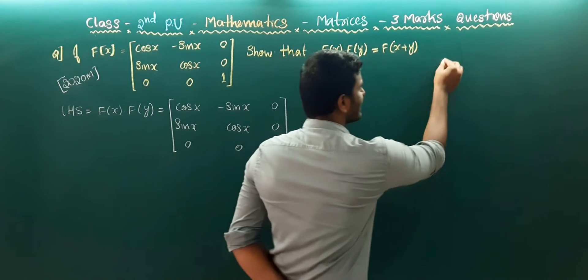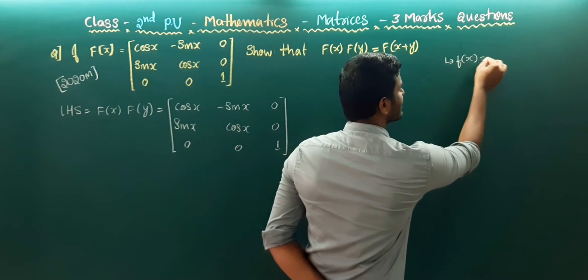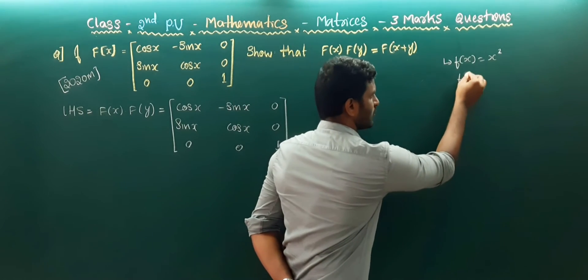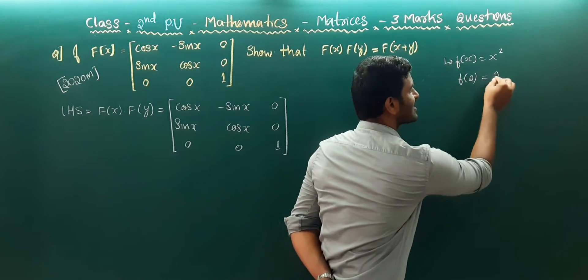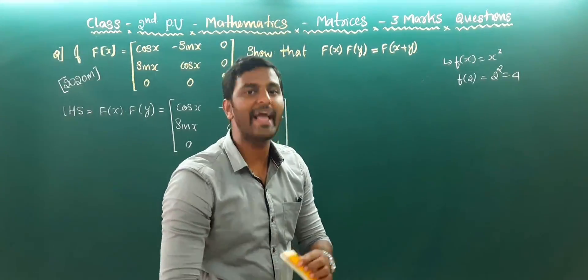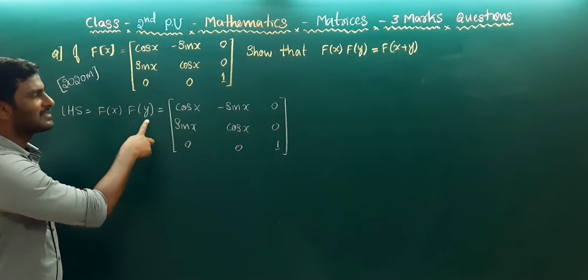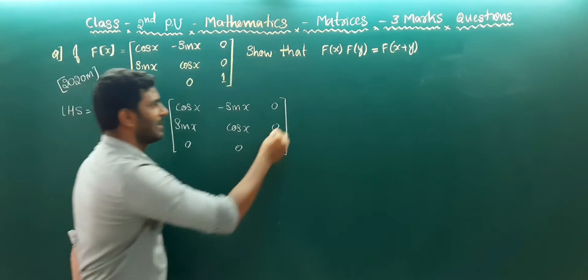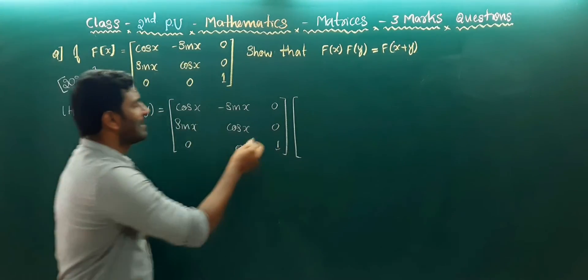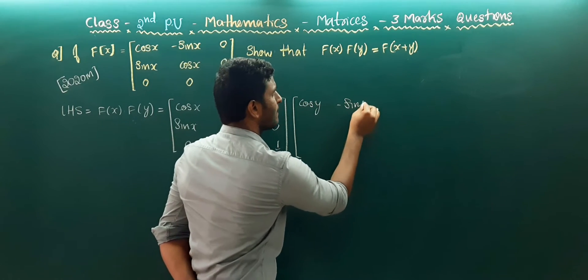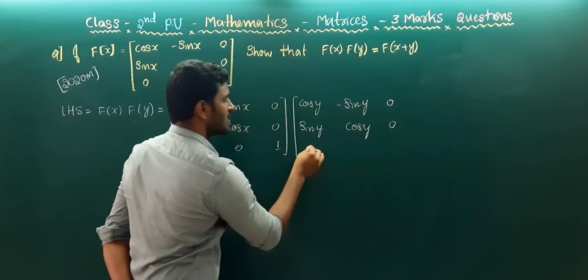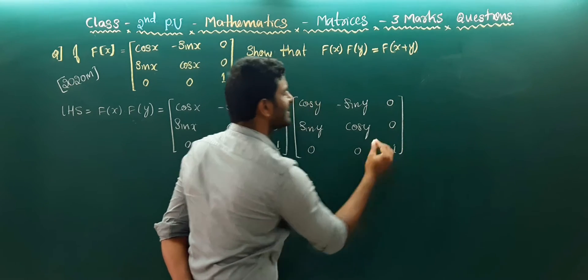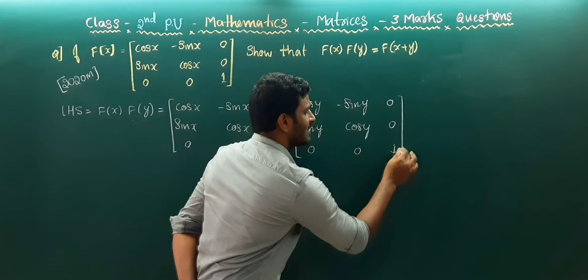Let us take an example. If the polynomial f(x) = x squared, then f(2) means we replace x by 2, so f(2) = 4. Just we are replacing x by 2. So in this case, f(y) means we are replacing x by y. Then the f(y) matrix is [cos y, -sin y, 0; sin y, cos y, 0; 0, 0, 1]. We are replacing x by y.